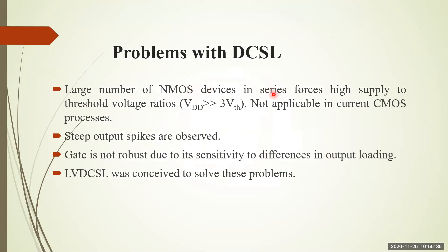Whenever a large number of N-devices are used in series, VDD must be increased to almost three times the threshold voltage. For example, if the threshold voltage is 0.5V, VDD must be 1.5V, whereas for standard CMOS structures at 0.9 nanometer technology, one volt VDD is sufficient. This is one of the major disadvantages of DCSL.